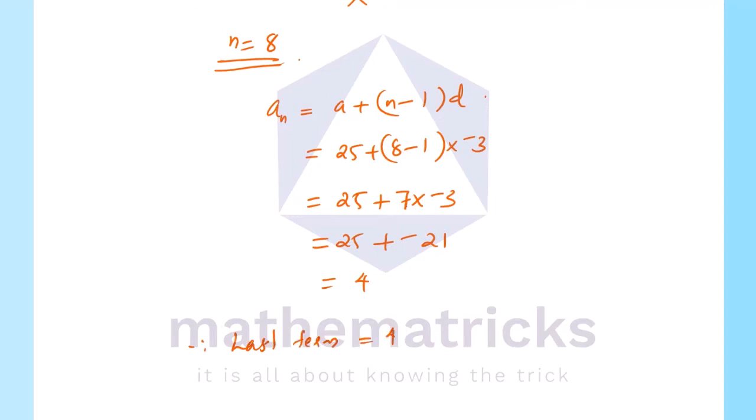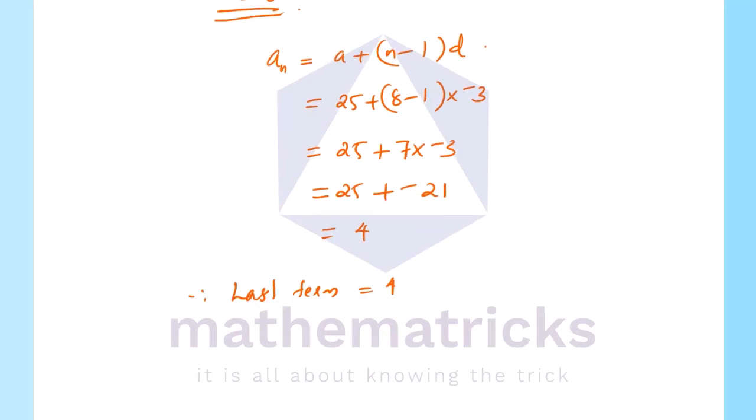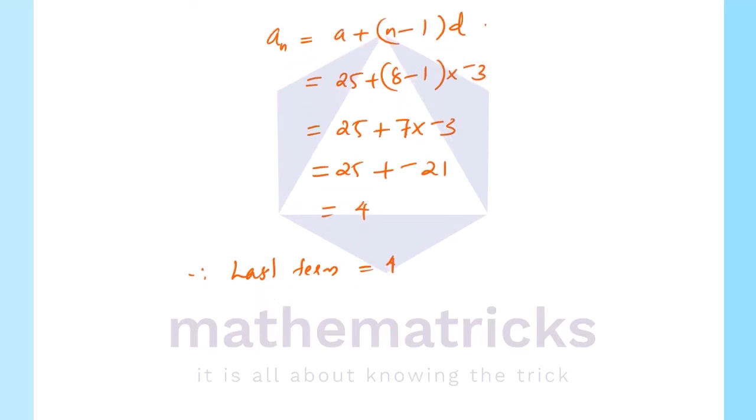The last term equals a + (n-1)d = 25 + (8-1)×(-3) = 25 - 21 = 4. So the last term is 4. Exercise 9.2 Question 6 is complete. We will do the remaining questions in the next session. Thank you.